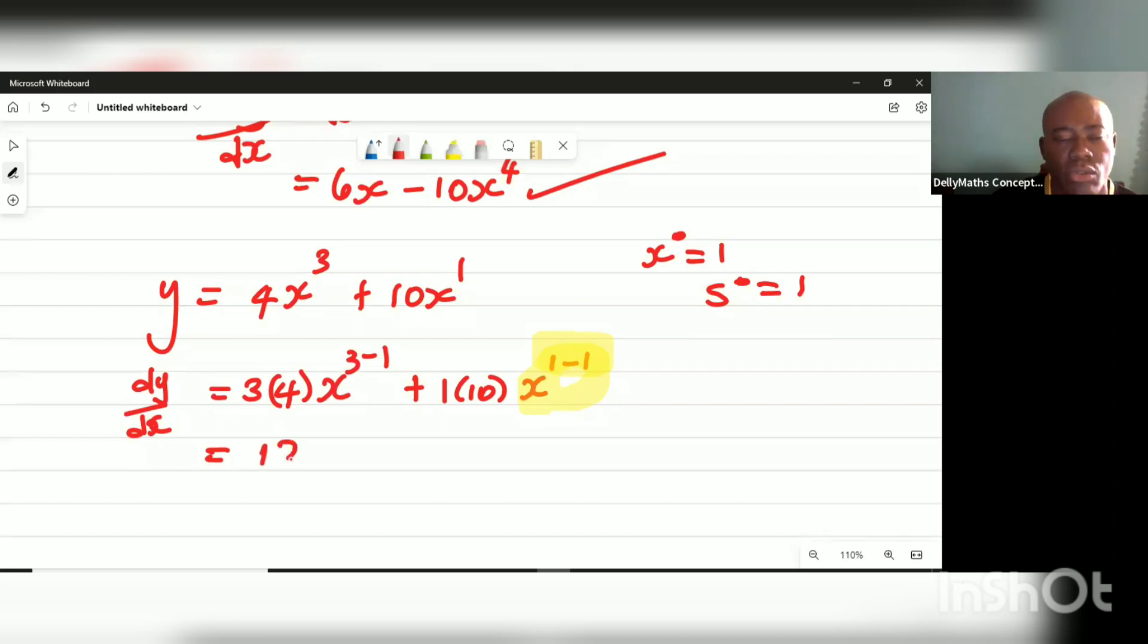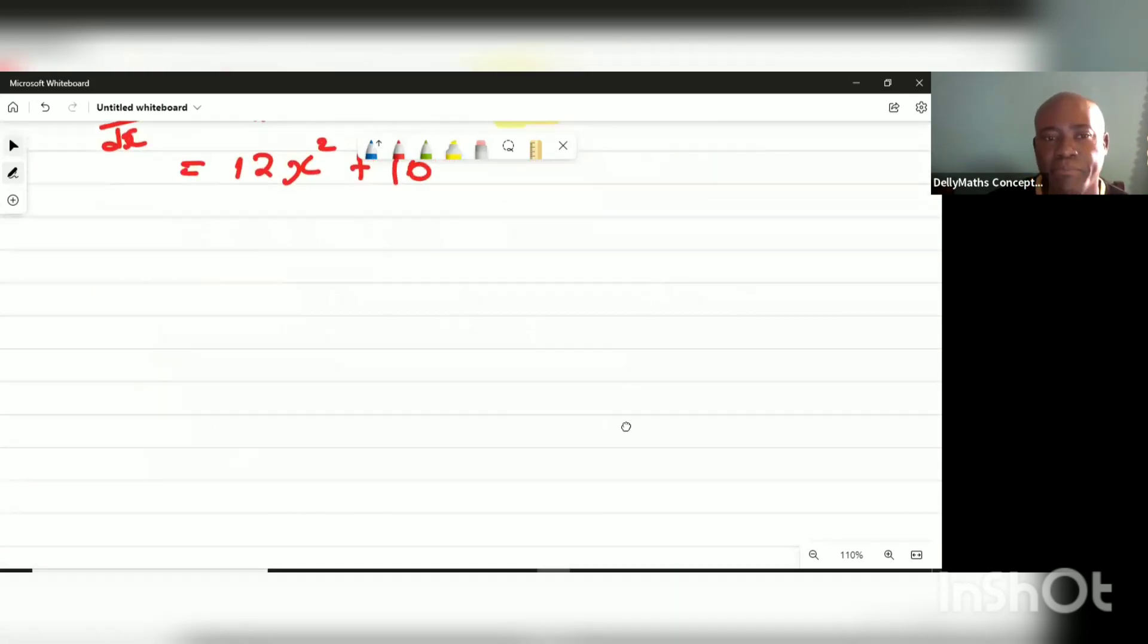So what we have here is dy/dx is going to equal to 12x² plus 10. And that is how easily we can actually walk ourselves through the power rule. The power becomes a coefficient and then we reduce it by one. Does not get any harder than that.